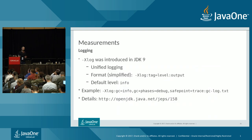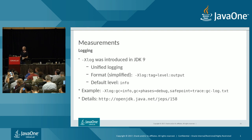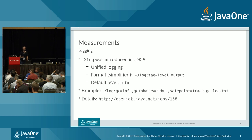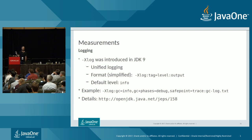For logging, JDK 9 introduced the -Xlog flag and unified logging framework. The simplified format is: -Xlog, then a tag, then the level for that tag, then where the output goes — stdout, stderr, or a file. For example: all messages tagged with gc at info level, messages tagged with gc+phases at debug level, and messages tagged with safepoint at trace level, all going to gc-log.txt. See JEP 158 on openjdk.java.net/jep/158 for full syntax details.